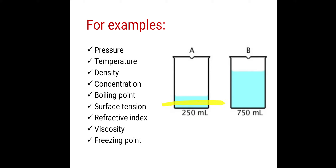The same is true about temperature. If we see the temperature of this 250 ml water — suppose it is at room temperature, that is 25 degree Celsius. Now if we add 500 ml more water, which is also at room temperature, that is 25 degree Celsius, then the temperature of that 750 ml water is 25 degree Celsius. It does not become 25 plus 25, that is 50 degree Celsius. It remains 25 degree Celsius. So these intensive properties are not additive.